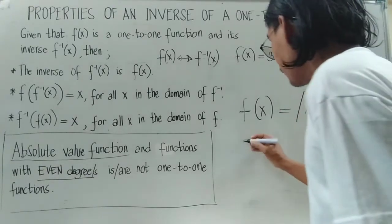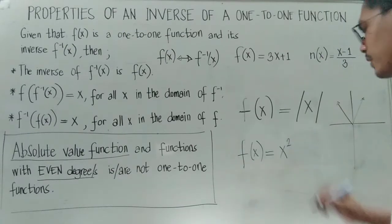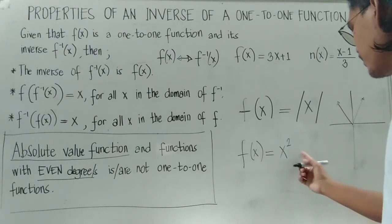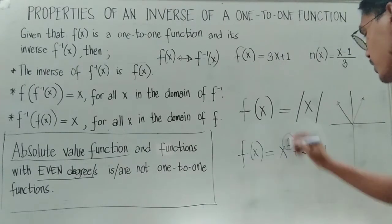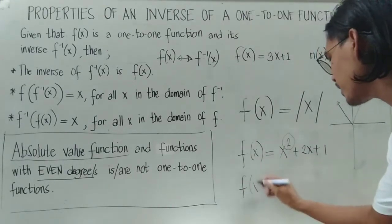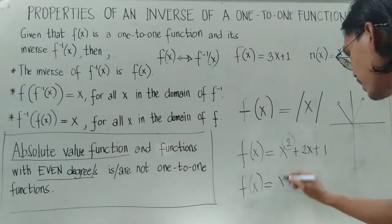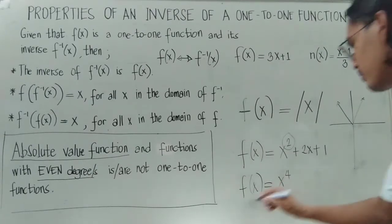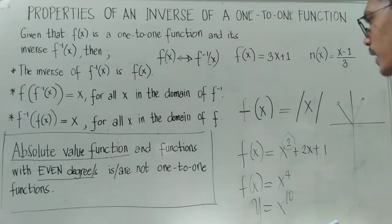Another example are functions with even degrees, such as a quadratic function like x squared plus 2x plus 1, where the highest exponent is 2. Even degrees are multiples of 2 — for example x raised to 4 or x raised to 10. When the exponent of a function is even, that function is automatically not one-to-one, just like the absolute value function.